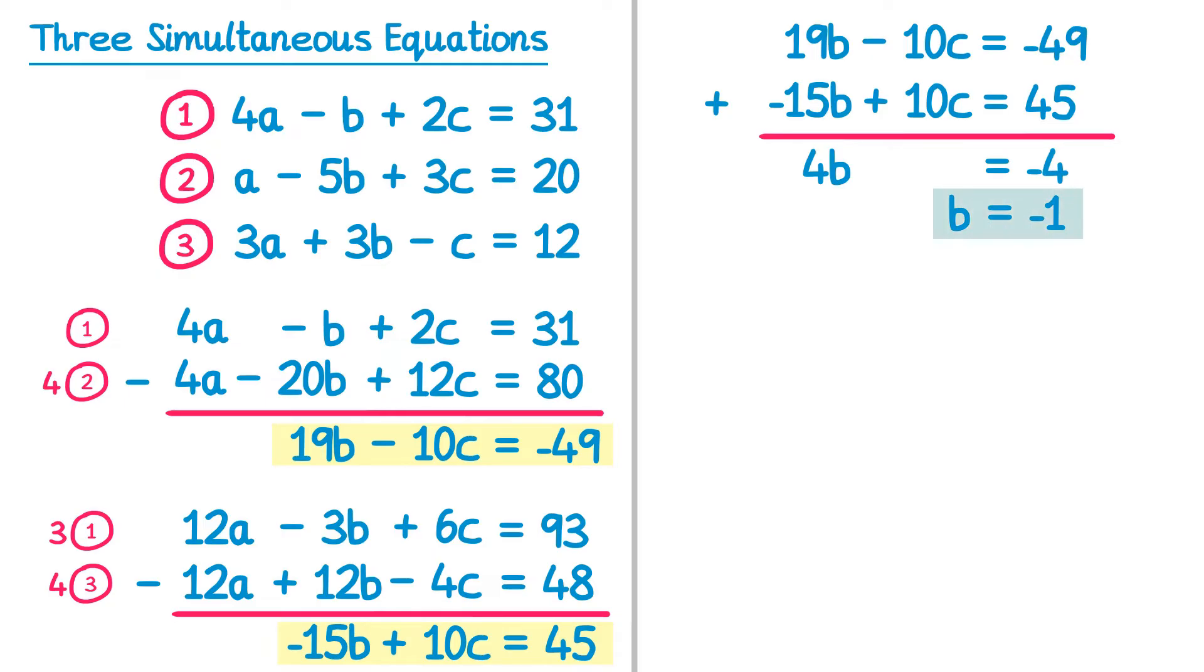Now we substitute negative 1 back into one of these two equations, it doesn't matter which one but I'm going to go for the second one of the two. So I've got negative 15b, so negative 15 lots of negative 1, plus 10c equals 45. Negative 15 times negative 1 is just 15. And then if I take 15 from both sides I get 10c equals 30, in which case c equals 3. So I found the second part of my solution, c equals 3.